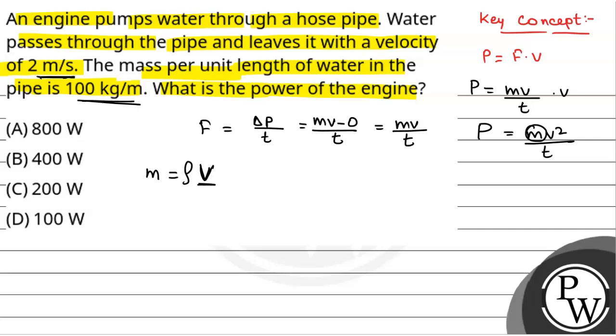Now, V is equal to A into L. So, mass will be equal to rho into A into L where A is the cross-sectional area and L is the length.